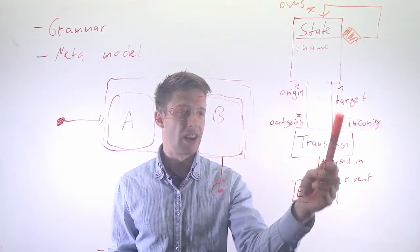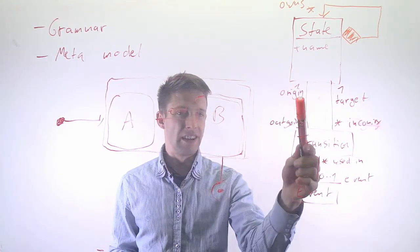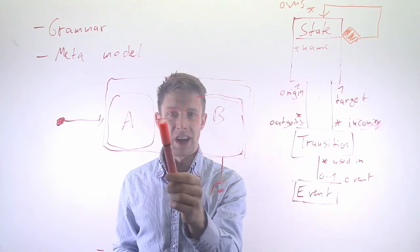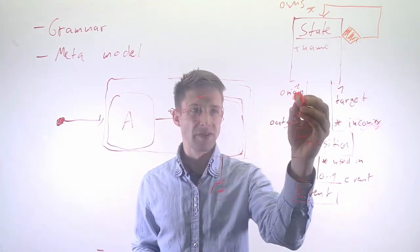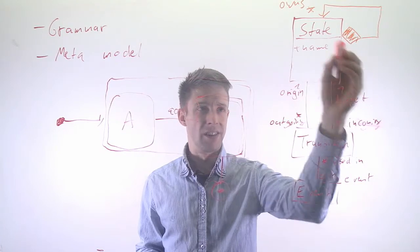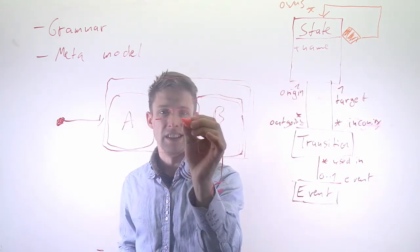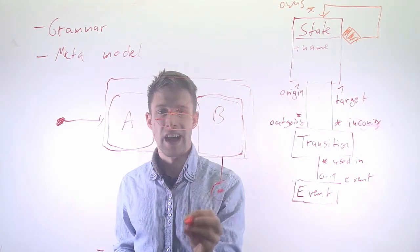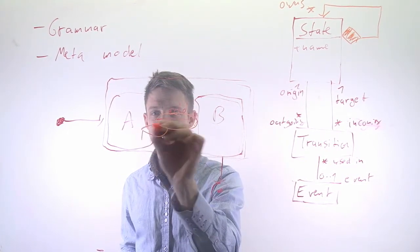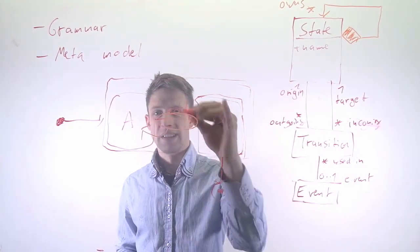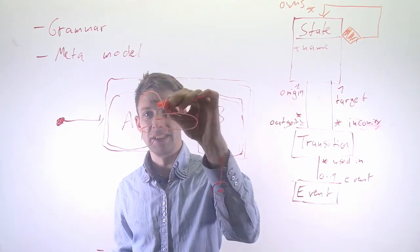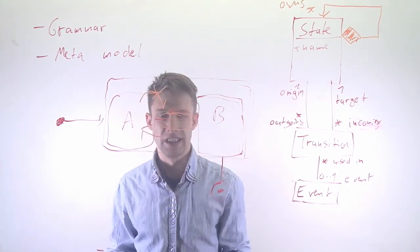We need to make sure that we cannot do arbitrary things. For example, this diagram, this class diagram, would allow us to say that this transition here has as an origin class A, but we could model this in a way that class A does not have this transition as an outgoing transition.